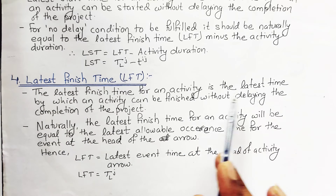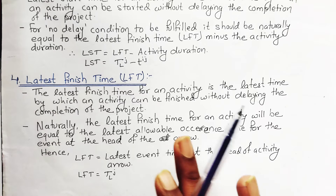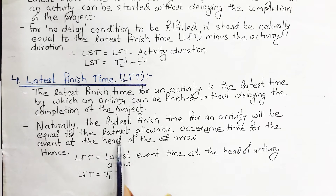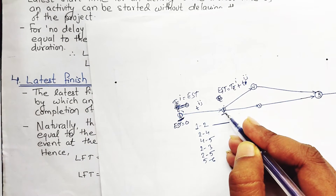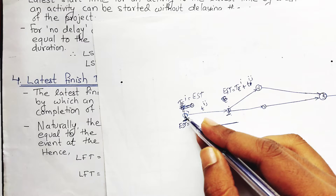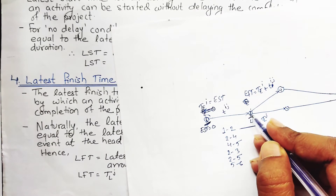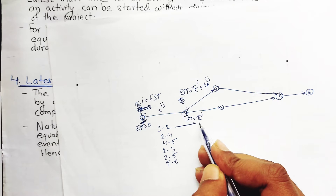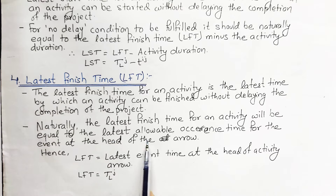The Latest Finish Time (LFT) for an activity is the latest time by which an activity can be finished without delaying the project completion. Naturally, the latest finish time of an activity is equal to the latest allowable occurrence time for the event at the head of the arrow. So for activity I→J, LFT = T_L(J) — it corresponds to the head event of the activity arrow.